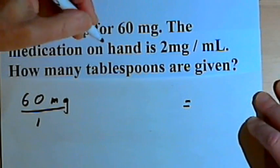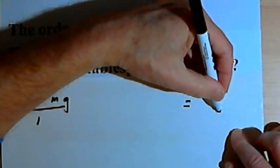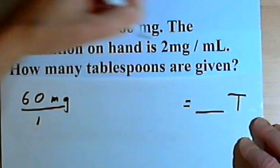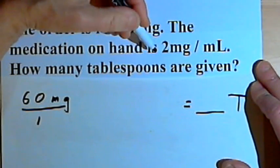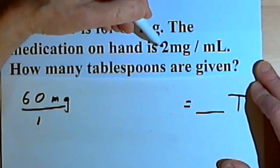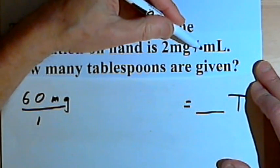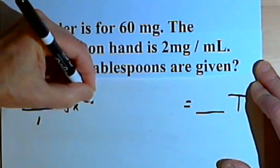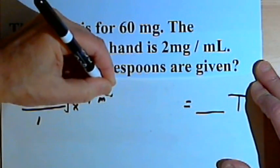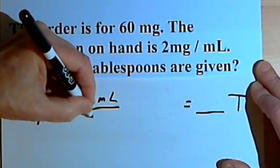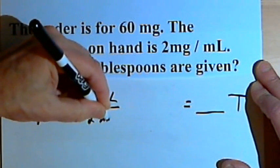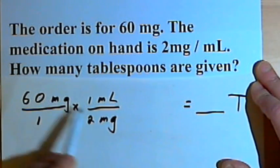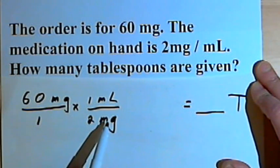On the right side of my equation I want to leave space for the answer, and the unit the answer has to be in — tablespoons. I know that the medication on hand is 2 milligrams per milliliter, so I'm going to take my first fraction and multiply it by the fraction 1 milliliter over 2 milligrams. By putting milligrams in the denominator, I'll be able to cancel the milligrams out of both fractions.